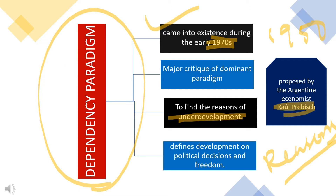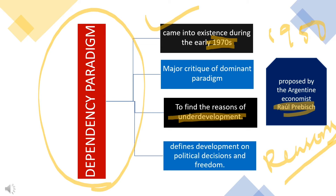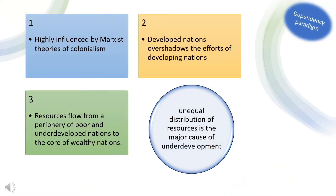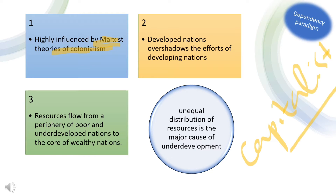The modernization paradigm identified development in terms of economic growth. As mentioned, all development theories were based on economic growth theories, so for modernization theorists, development was purely economic growth. But the dependency paradigm defines development in terms of political decisions and freedom. Dependency theories were highly influenced by Marxist theories of colonialism.